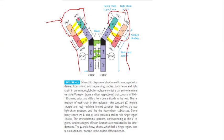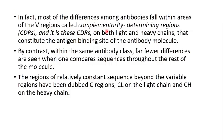The rest of the region, other than the variable region, is called the constant region. The difference between two antibodies lies in their variable regions, while their constant regions are somewhat similar. Most of the differences among antibodies fall in areas of the variable region, and these specific areas within the variable region where differences are seen are called complementarity-determining regions, or CDRs.